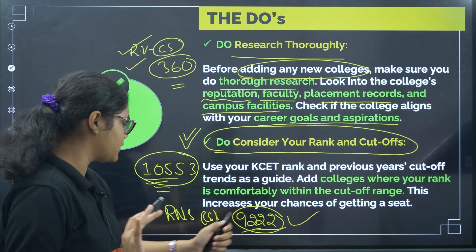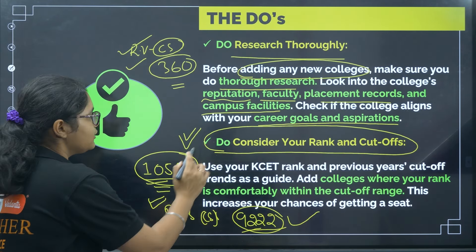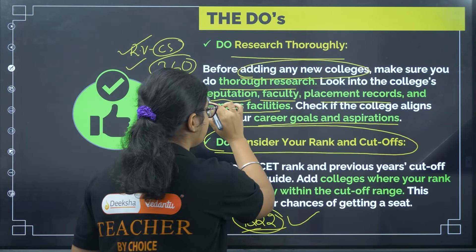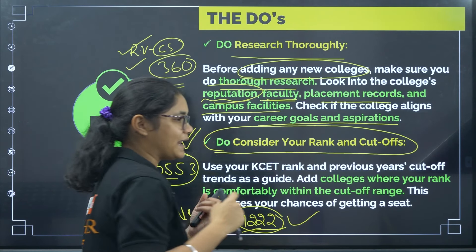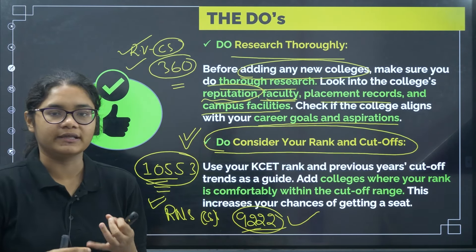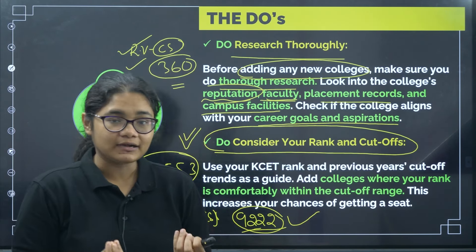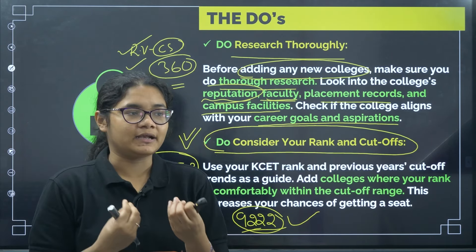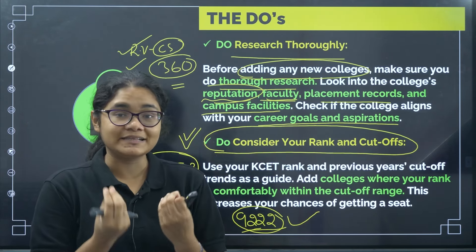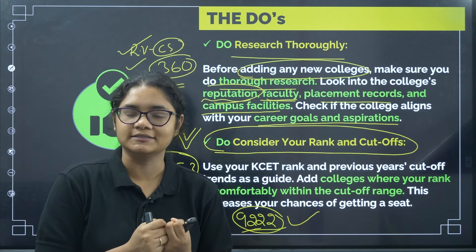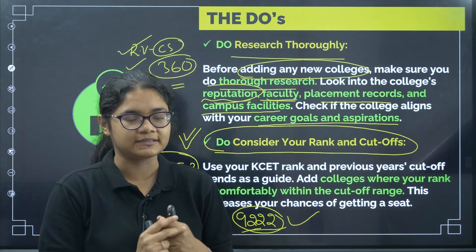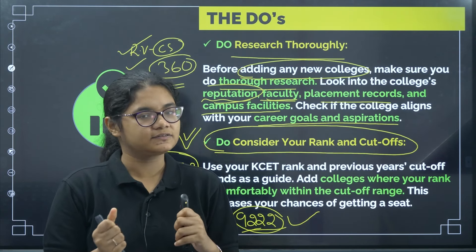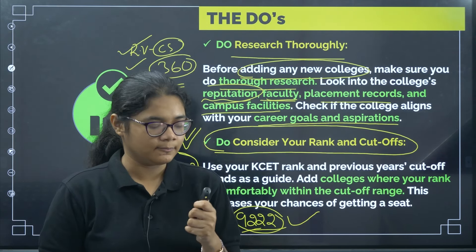Once you have selected a college based on rank and cutoff, you need to check the college's ranking, the quality of faculties, placement opportunities, and infrastructure facilities. These are all things you need to consider.